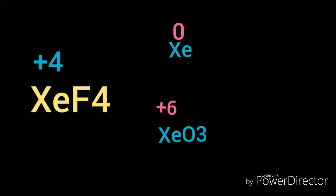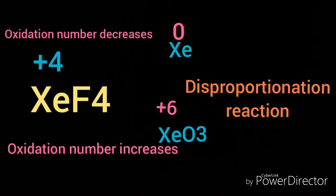When there is increase and decrease in oxidation number of an element, that is a disproportionation reaction.